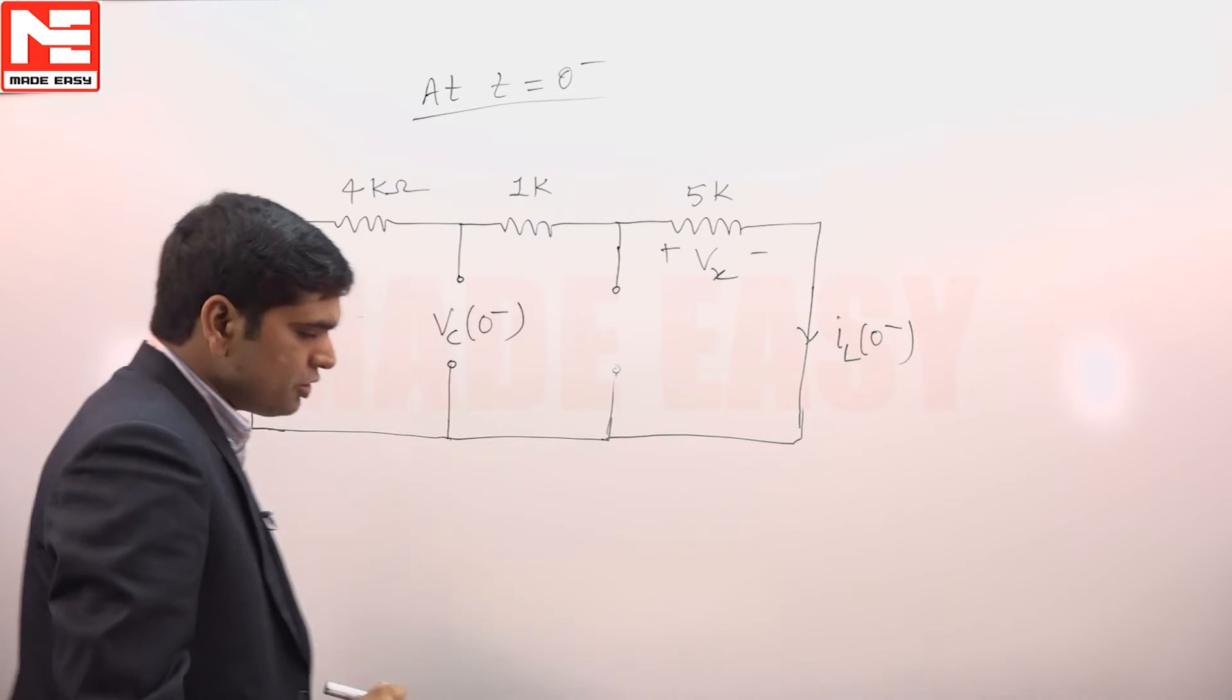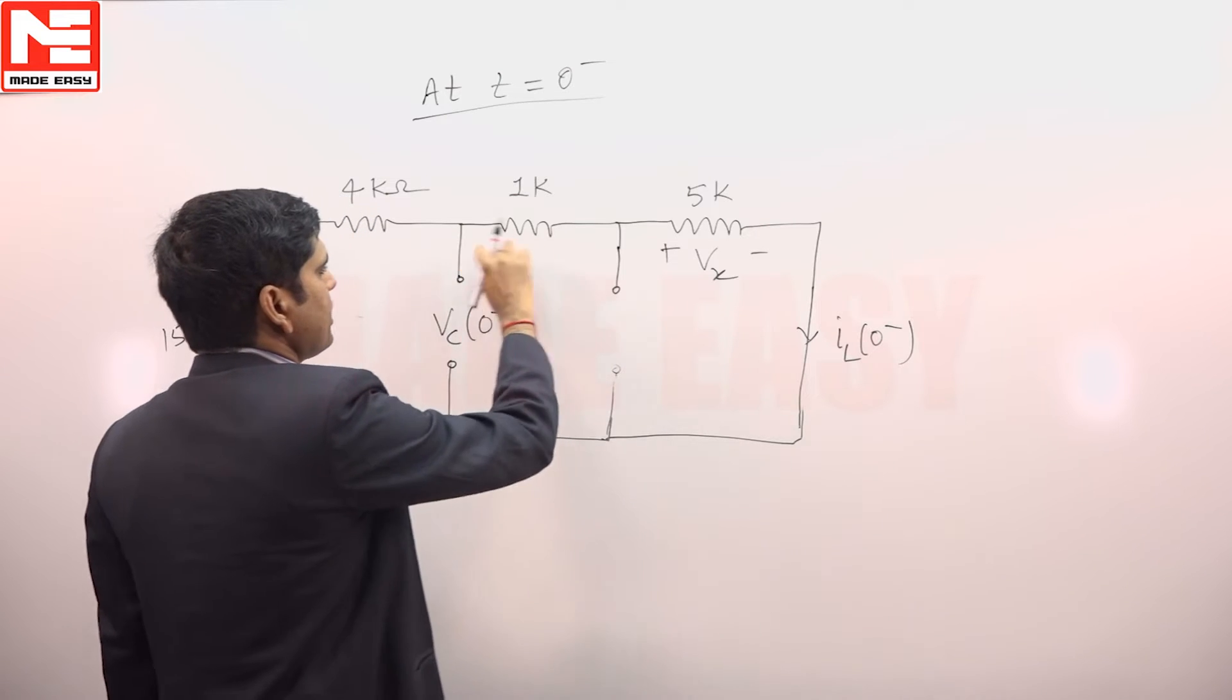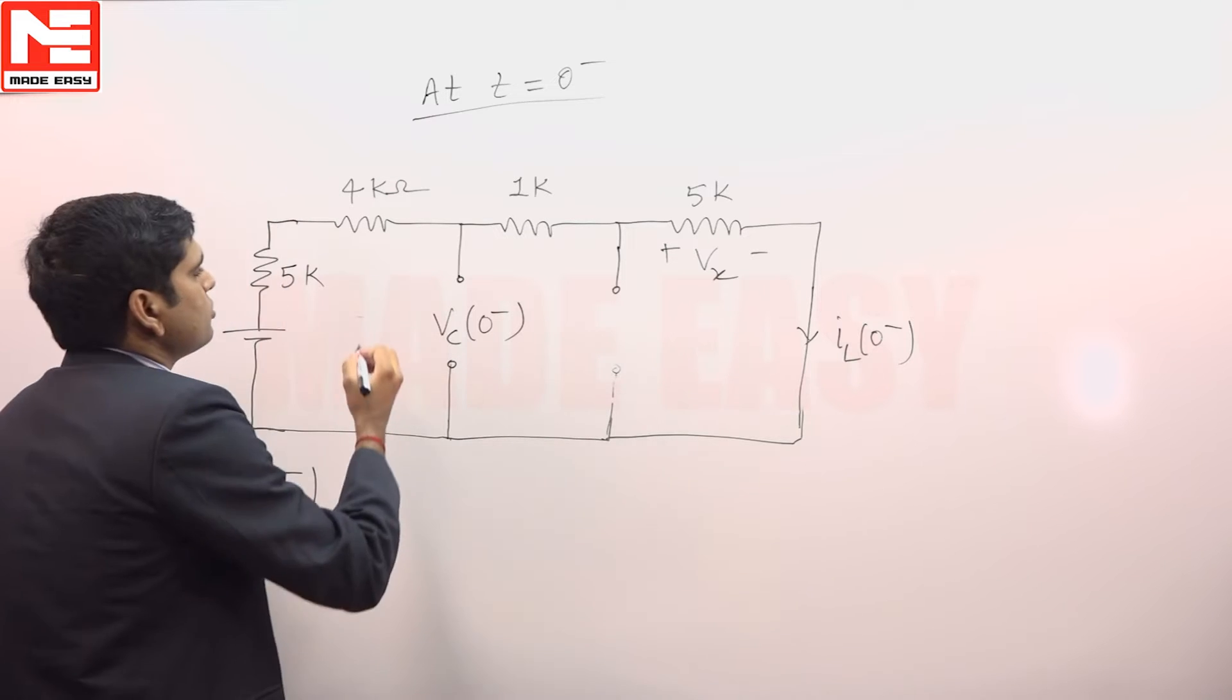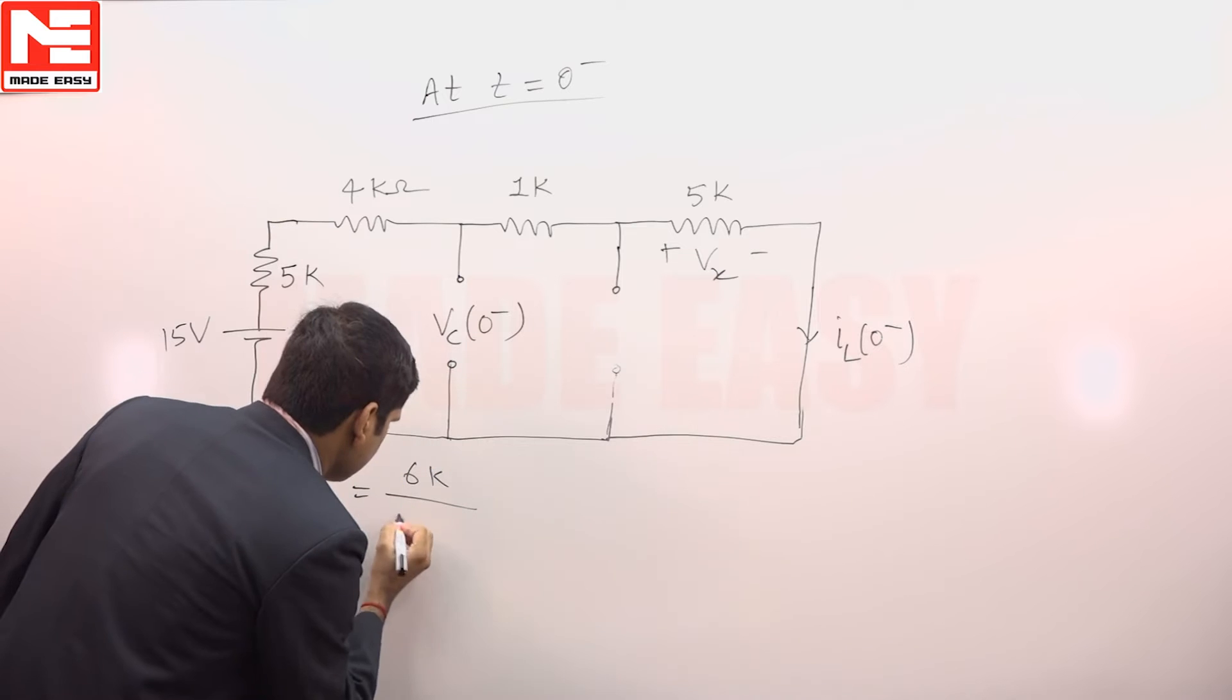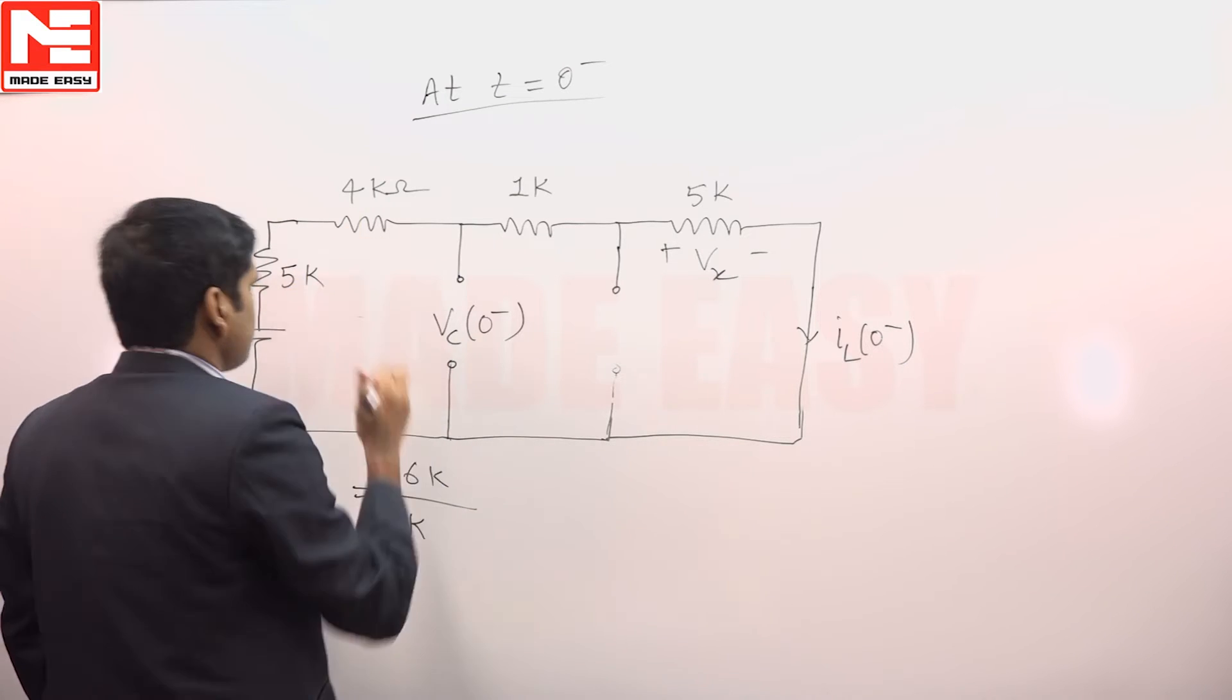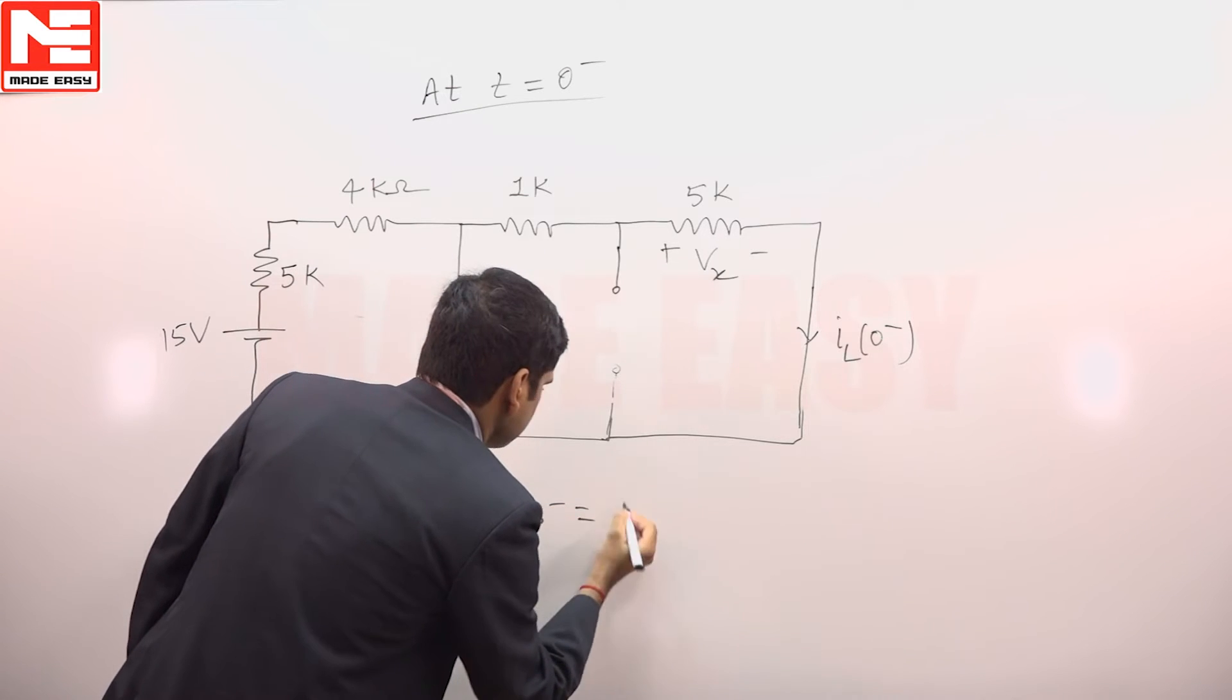If we need to calculate VC 0 minus this voltage, this voltage is the voltage across this branch. VC 0 minus is equal to 6k divided by 6k plus 5 plus 4 that is 9k into 15, that is equal to 6 volt.